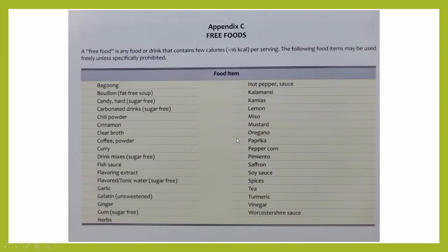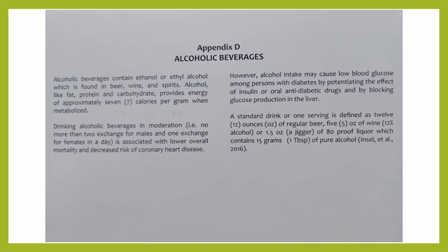For appendix C, these are what we call the free foods. When we say free foods, these are food or drinks that contain few calories — about below 16 kilocalories per serving — and they may be used freely in meal planning unless specifically prohibited. You also have your alcoholic beverages, which will provide approximately 7 calories per gram when they are metabolized.